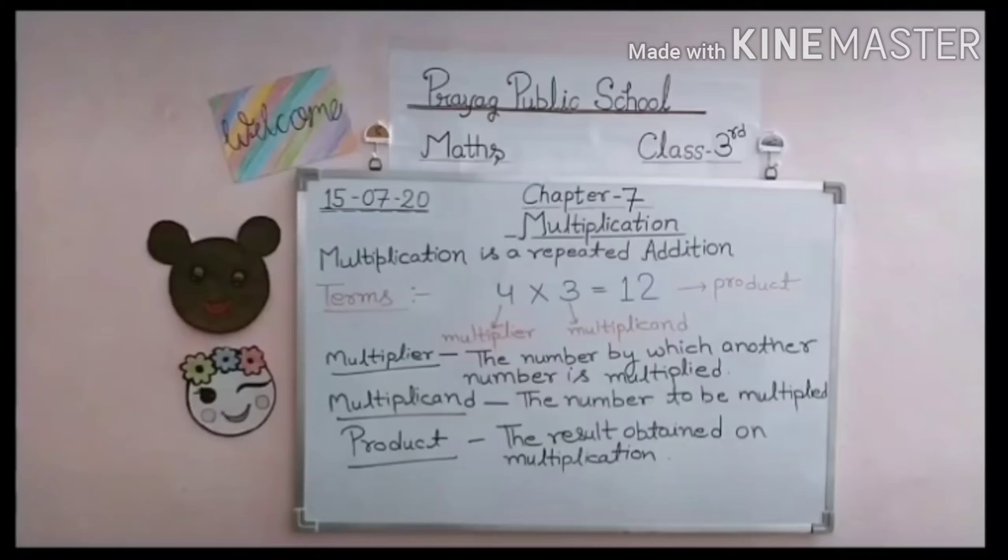Multiplication has some terms. Which ones? Three terms: multiplier, multiplicand, and product. What is the multiplier? In this example, 4 is the multiplier. Why? The number by which another number is multiplied - the number we multiply with - is called the multiplier. 4 is being multiplied by 3, so 4 is the multiplier.